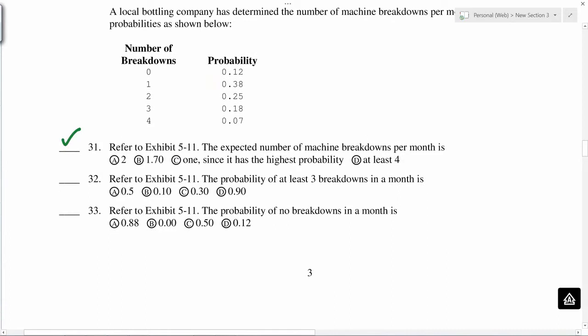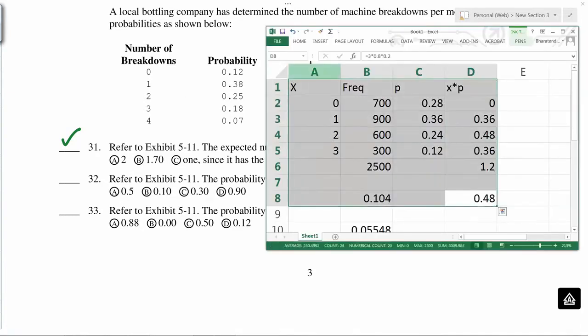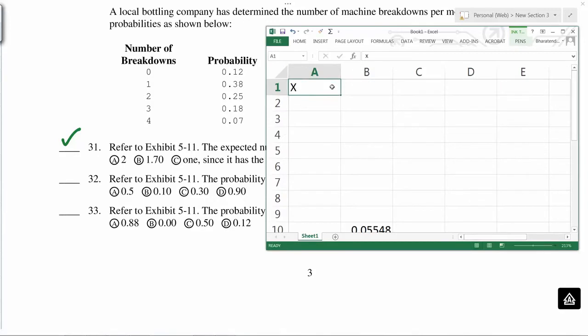So expected number of machine breakdowns per month. For that, we have to multiply these two columns. So let's delete this. Now we have x and p, and then we create x times p and do the total to get the final answer. So 0.